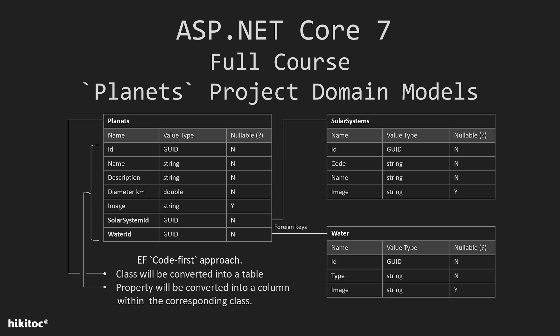This is how our domain model will be structured in the database. Now we will define these classes to model our database data. The Planets class, for example, will include seven properties, including a unique GID property.